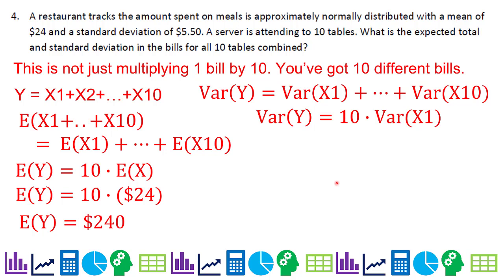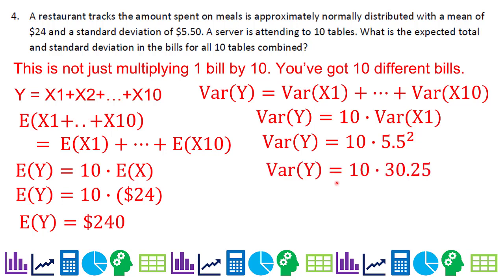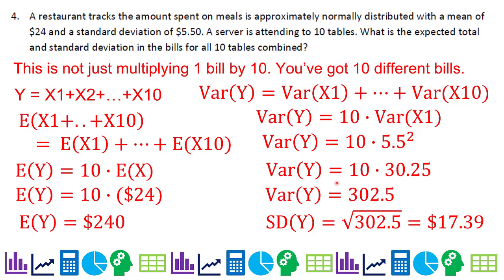Since all variances are the same, we pull out the 10. Variance is standard deviation squared, so we take 5.5 squared = 30.25, multiply by 10 to get 302.5, then take the square root to get $17.39. If you had just multiplied $5.50 by 10 you'd get $55 — that's wrong. With 10 different tables, variability averages out, producing a tighter distribution.